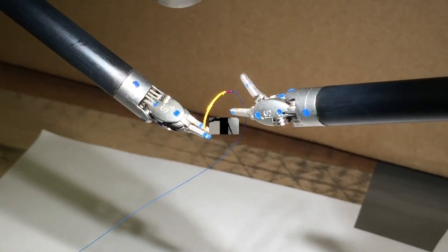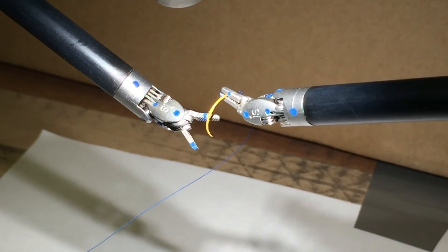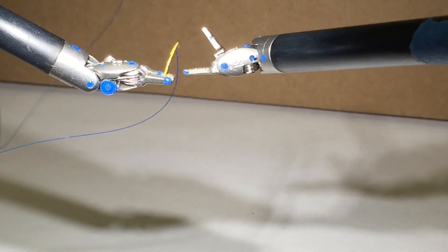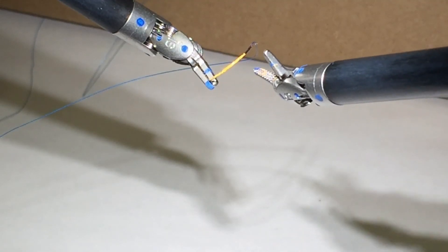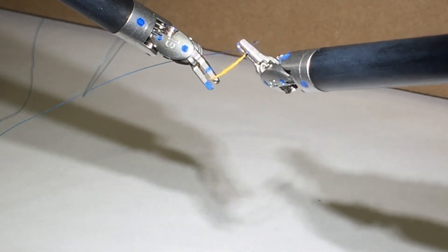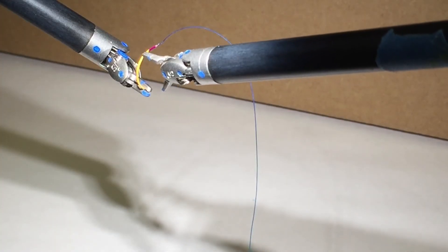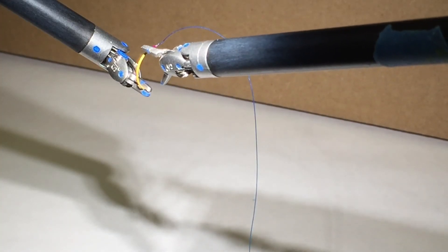The policy learned by reinforcement learning is also tested in the real world on the DaVinci Research Kit. One of the end effectors is initialized holding a suture needle of radius 5.4 mm. The other end effector will follow the policy to regrasp the needle.